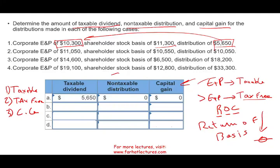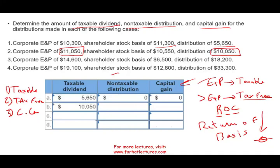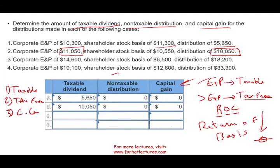Scenario two: distribution of $10,050 with E&P of $11,050. The whole $10,050 is taxable; non-taxable distribution is zero; capital gain is zero. On the CPA exam, remember to fill in those zeros — don't leave them blank. Filling in those zeros tells the AICPA and the testing software that you understand no portion of that distribution is non-taxable or capital gain. You would lose points for nothing, especially on simulations.